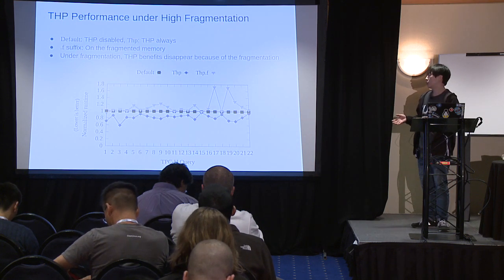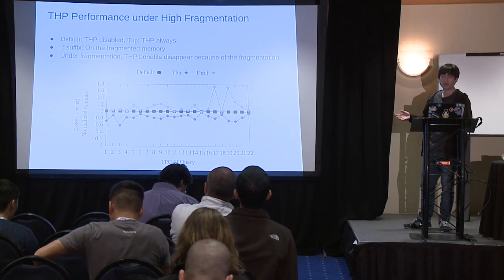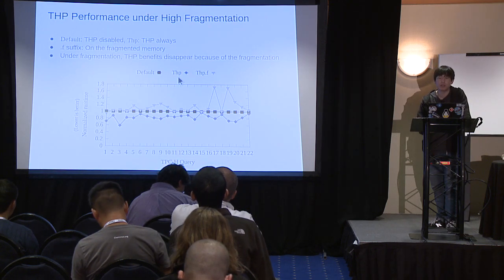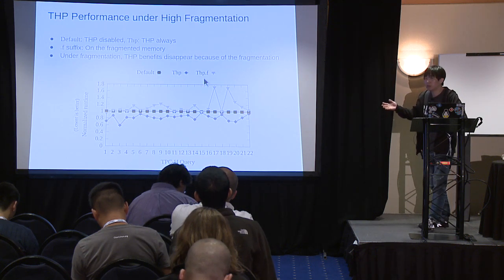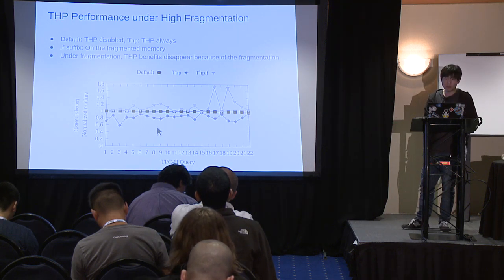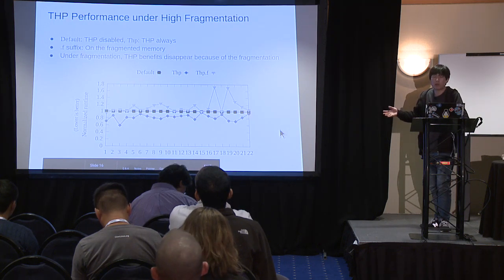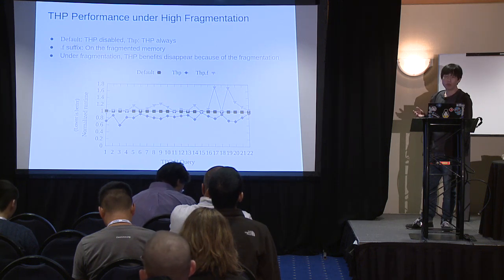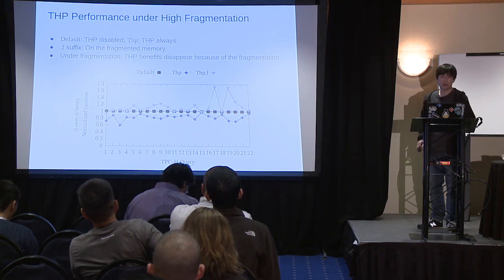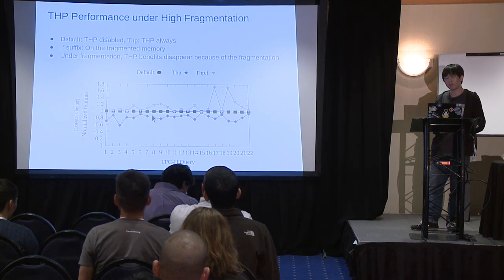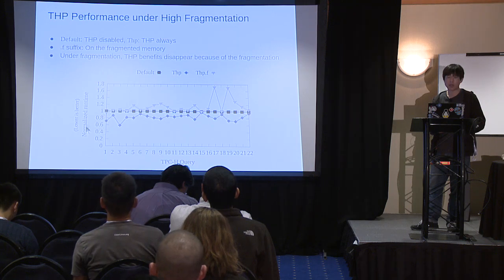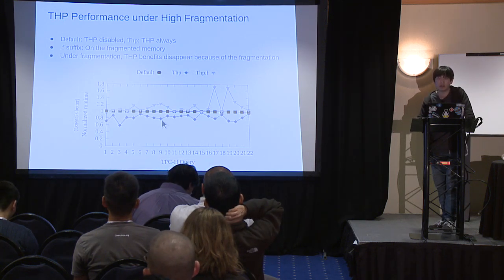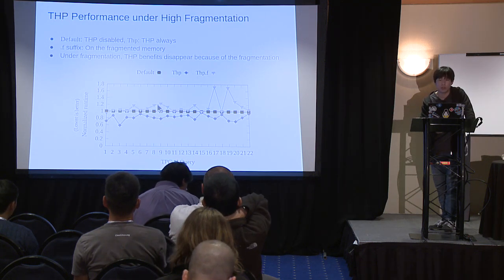Transparent huge pages use the buddy allocator to allocate huge pages, but quickly fall back to regular pages if allocation fails, to guarantee fast latency. As a result, it cannot be reliably used on highly fragmented memory systems. We measured THP performance on a highly fragmented memory system: the TPC-H database benchmark — which simulates OLAP workloads — shows that THP really improves performance on a non-fragmented system, but on a fragmented system, THP doesn't give improvement and even shows worse performance.